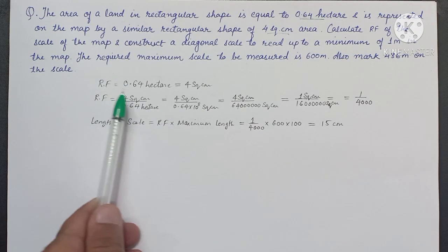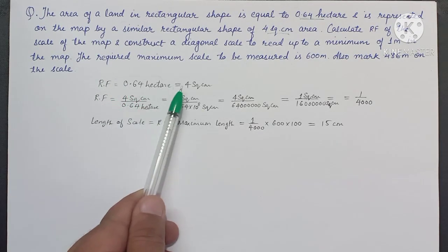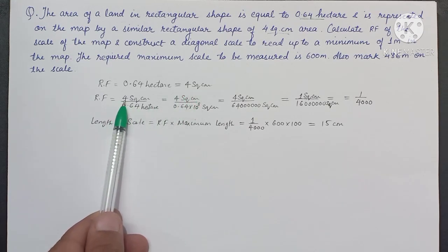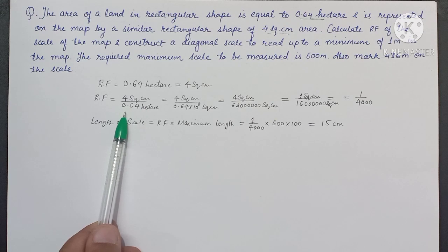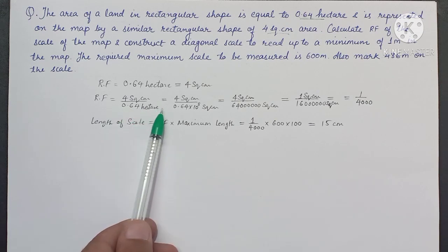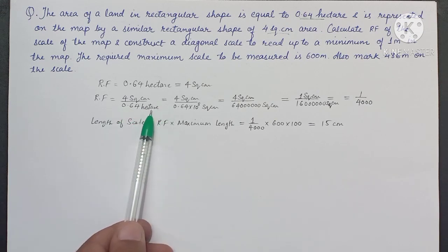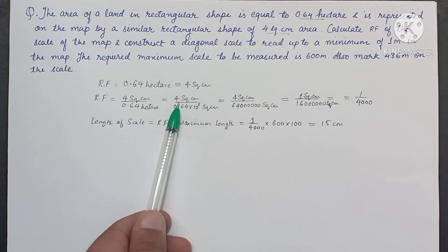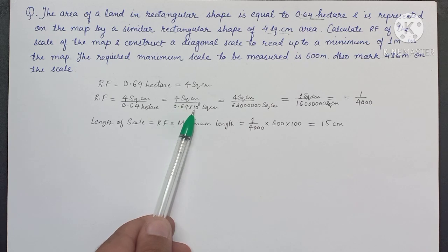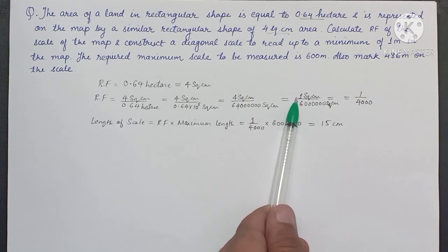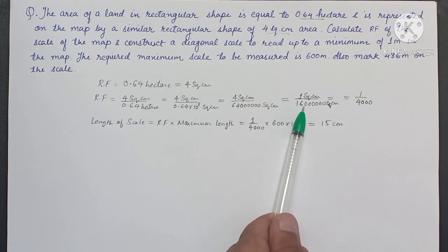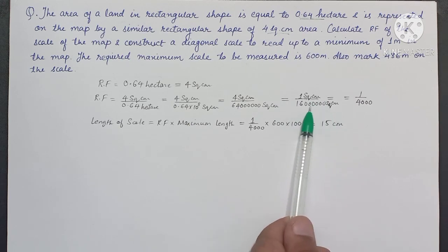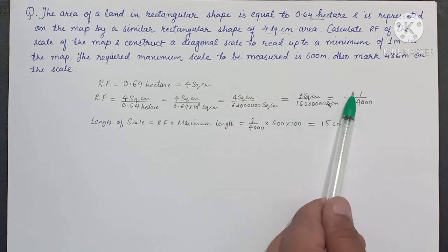The representative factor will be 4 square centimeter divided by 0.64 hectare. We convert the unit from hectare to square centimeter, so we get 4 divided by 0.64 into 10 to the power 8. On reducing we get this value in square centimeter, and taking the square root we get the value 1 by 4000.